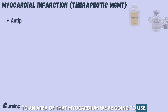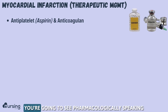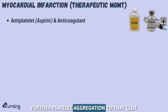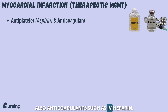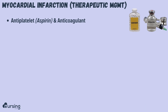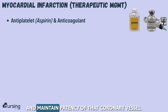What kind of medications or treatment modalities are we going to use for patients with MIs? Pharmacologically speaking, antiplatelets are given, such as aspirin, to prevent further platelet aggregation to that clot within the coronary vessel. Also anticoagulants such as IV heparin — medications we see all the time in the CVICU — given to try and maintain patency of that coronary vessel.